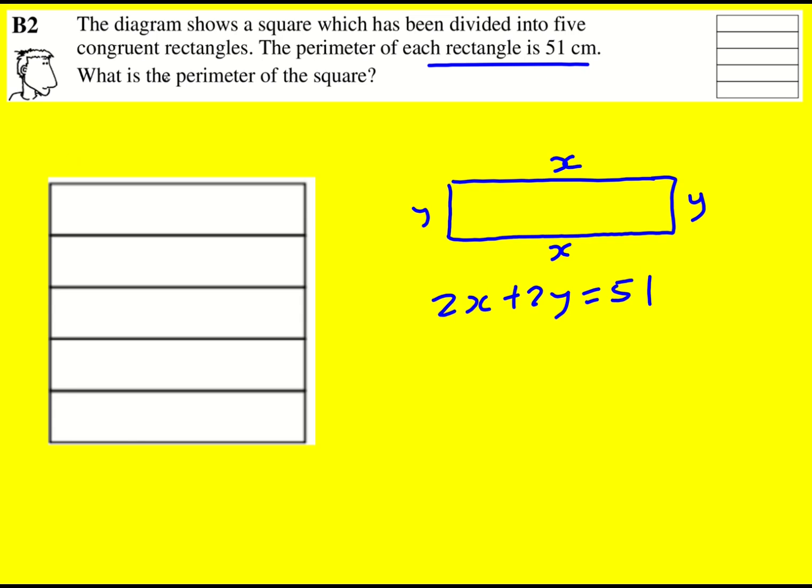Now there's another piece of information that's going to be crucial, and that is the fact that we've got our original square and this length is x and each of these is y. So we can also see that x is in fact equal to 5y, because remember it's a square.